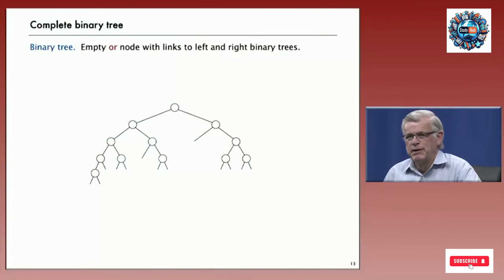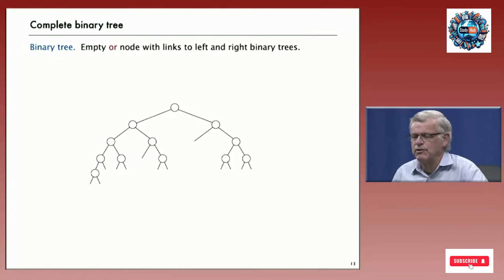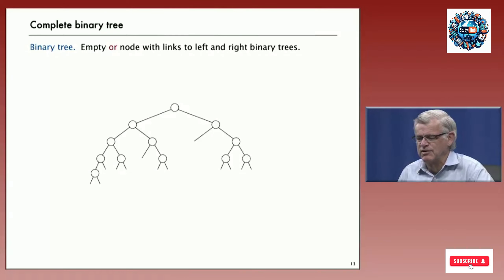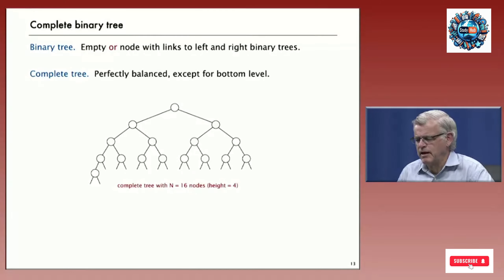The idea of a binary heap is based on the idea of a complete binary tree. A binary tree is either empty or it's a node with links to left and right binary trees. A complete binary tree is one that's perfectly balanced except possibly for the bottom level — there might be a few nodes on the bottom level one level lower, but otherwise all levels are full.